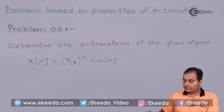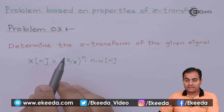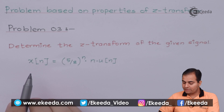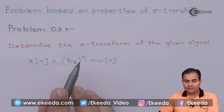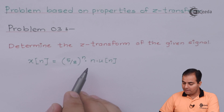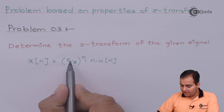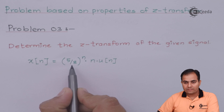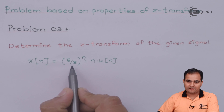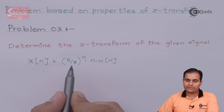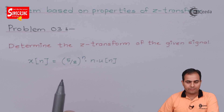The question is: determine the Z-transform of the given signal. The sequence is X(n) = (5/8)^n * u(n). Here we have 'a' and the value of a is 5/8. We have a^n, which means we have to use the time scaling property.